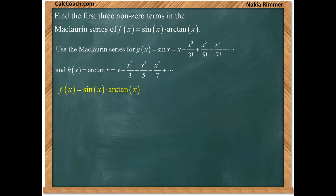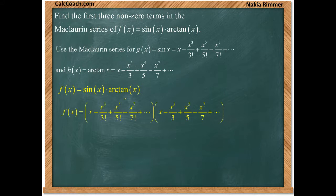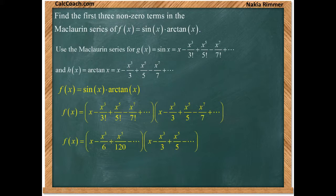Now they said the first three non-zero terms, so let's just take the first three non-zero terms of each. Although we have four here, let's just take the first three, simplifying three factorial we get six, five factorial is 120. And so let's see if that's going to be enough.